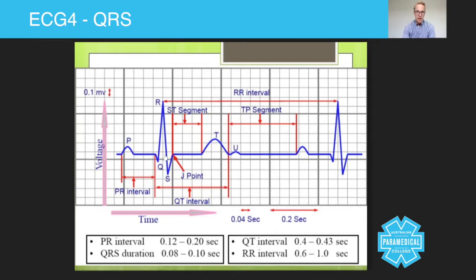So if it's bigger than 0.10, in other words more than two and a half small squares, because that's 0.04, 0.08, to get that up to 0.10 you've got a half a square. So if it's more than two and a half small squares, that's not good. That's actually a type of block. In other words, it's taking the signal of the heart too long to move from one part to the next in the lower part of the ventricular system, and there's something there blocking it.